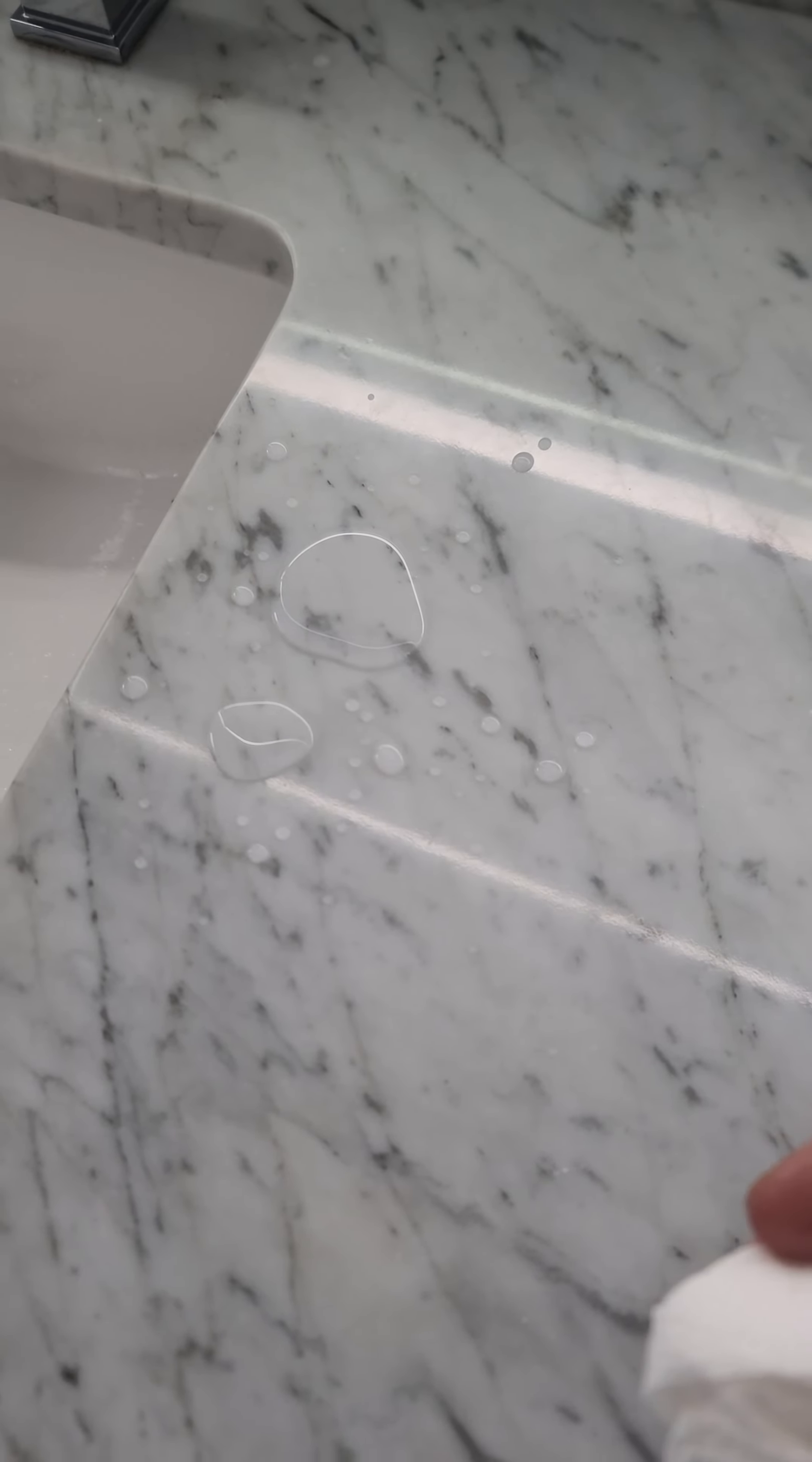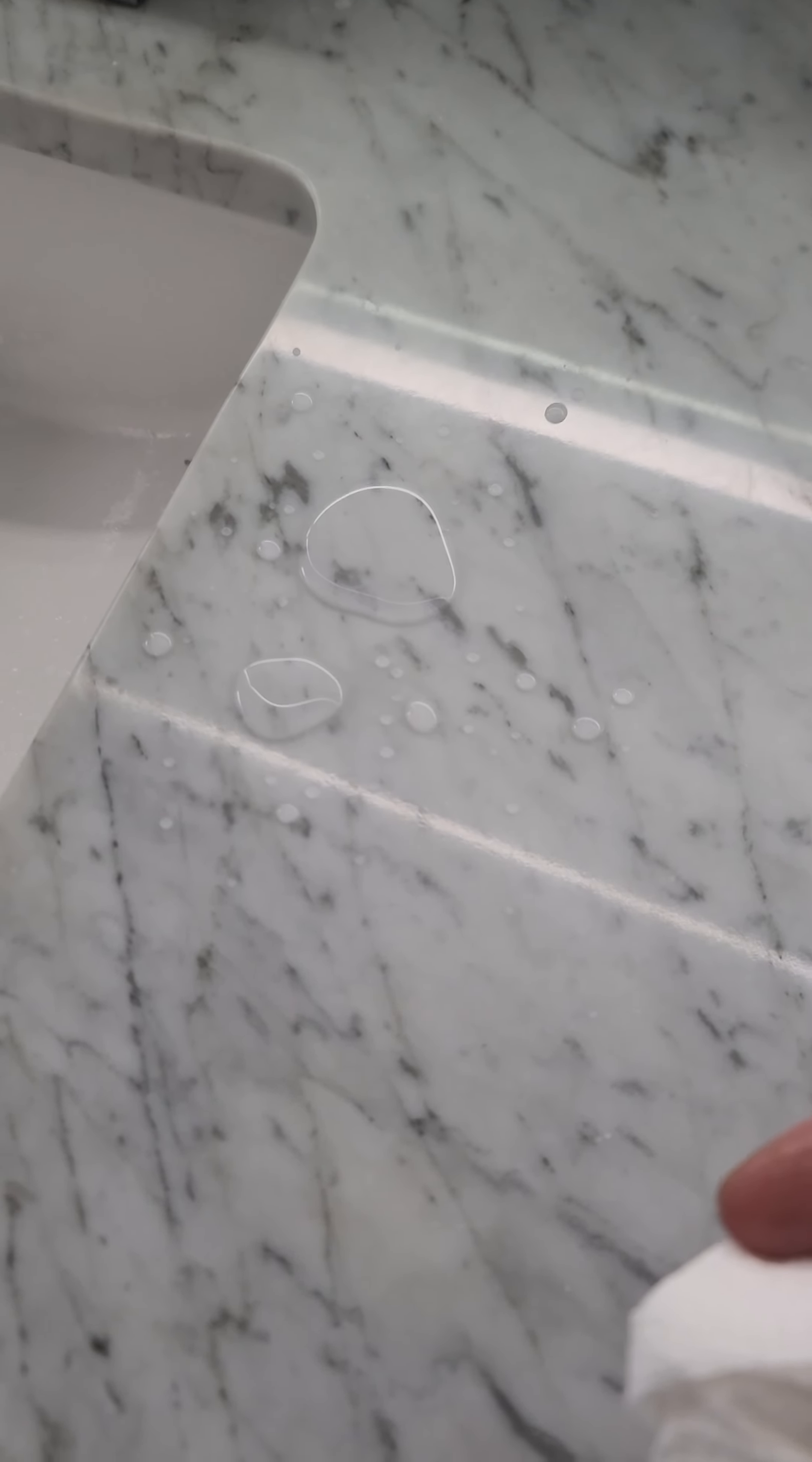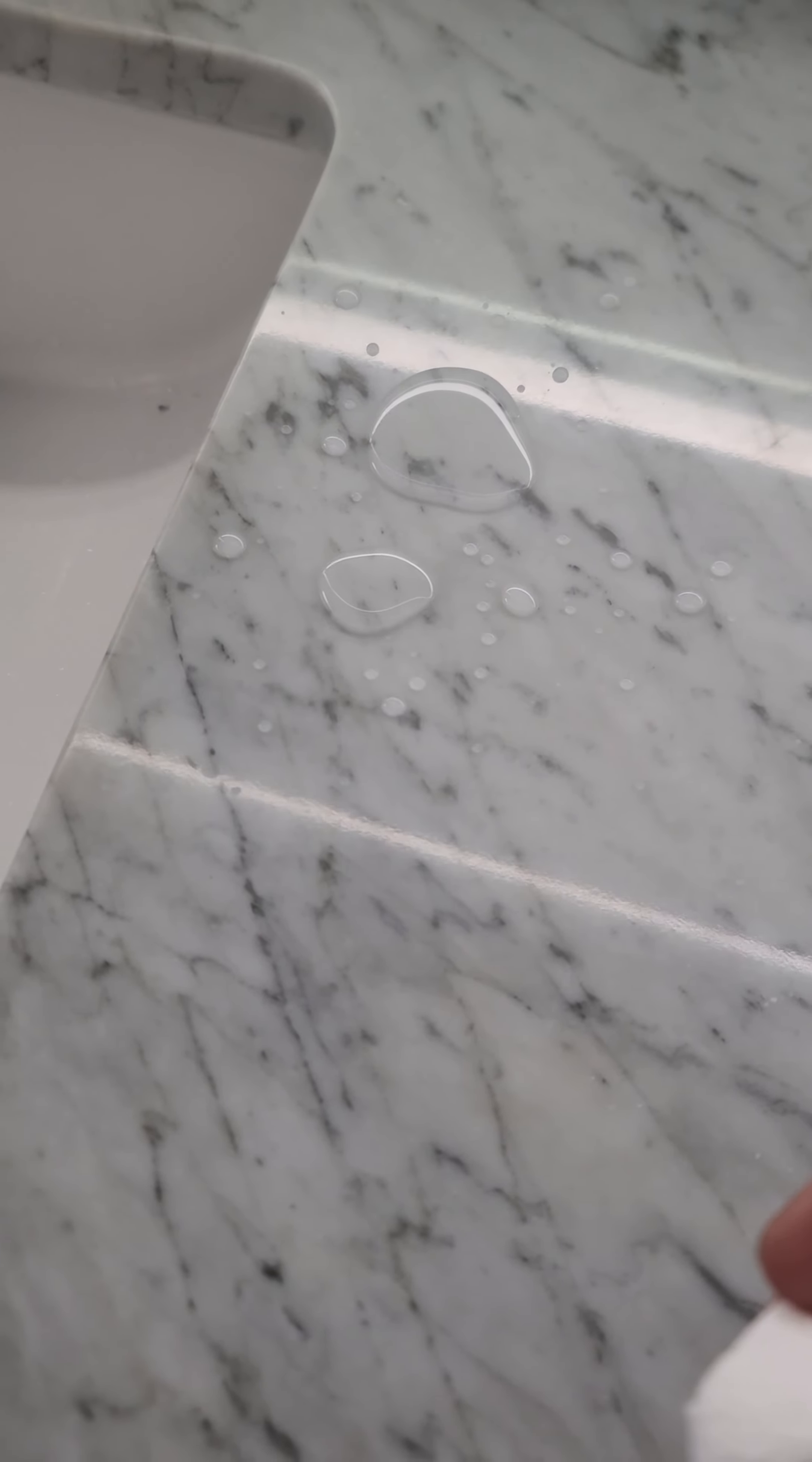Of course there's products that can seal the marble, but I decided to use my leftover ceramic coating on the marble itself. You could see the water droplets, they're not getting absorbed into the marble. Marble as you already know is very soft and porous and the water can just go right in.